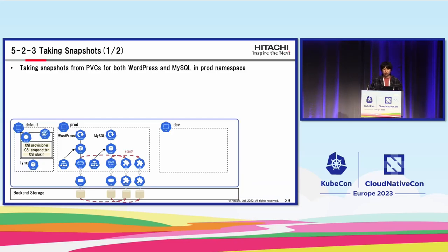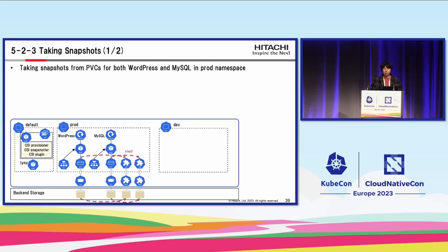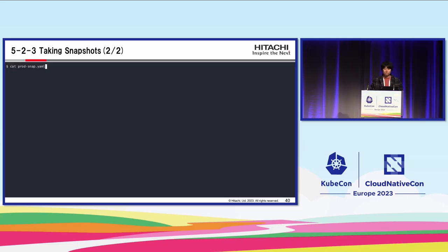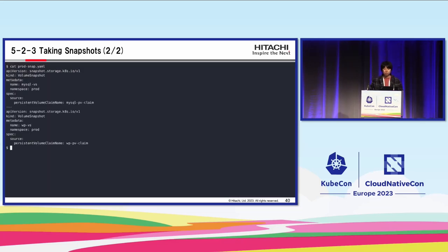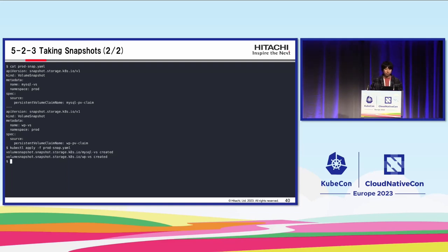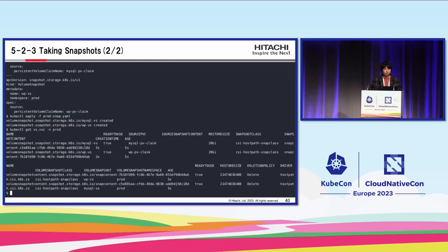Step three: take a snapshot. This step takes a volume snapshot from the PersistentVolumeClaim for both WordPress and MySQL in the prod namespace. We create a VolumeSnapshot for each, defining each PVC's information and deploying. Let's wait a minute and check if the volume snapshot was taken successfully.